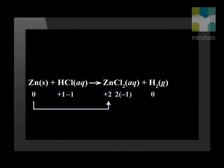The zinc went from having a charge of zero to a charge of plus two. At the same time, the hydrogen went from having a charge of plus one on the reactant side to having a zero charge on the product side. The zinc lost two electrons to become positively charged, while the hydrogen gained two electrons to become neutral. Thus, this is a redox reaction.